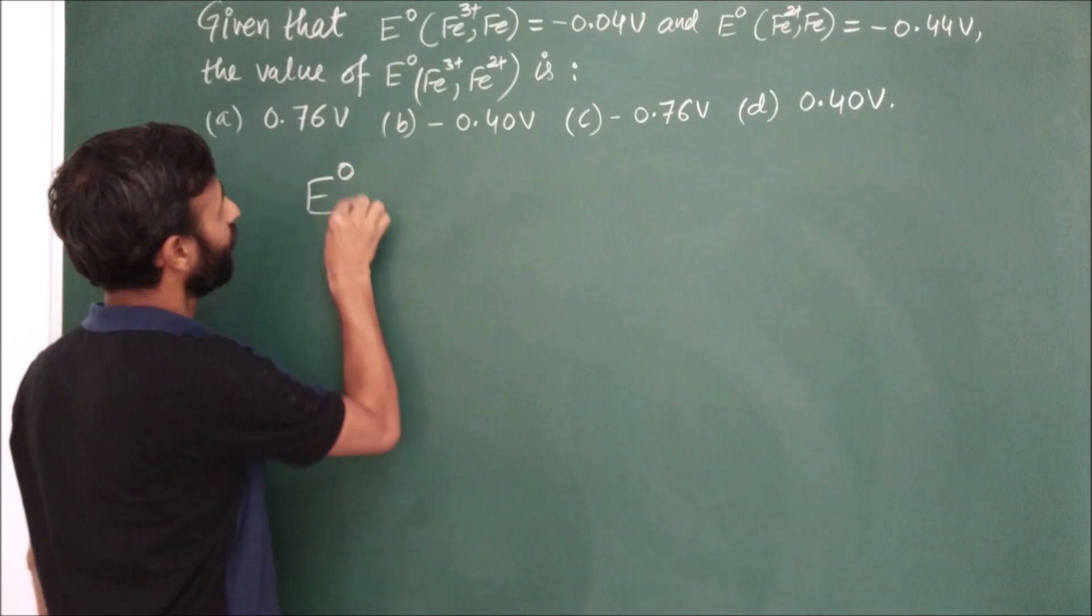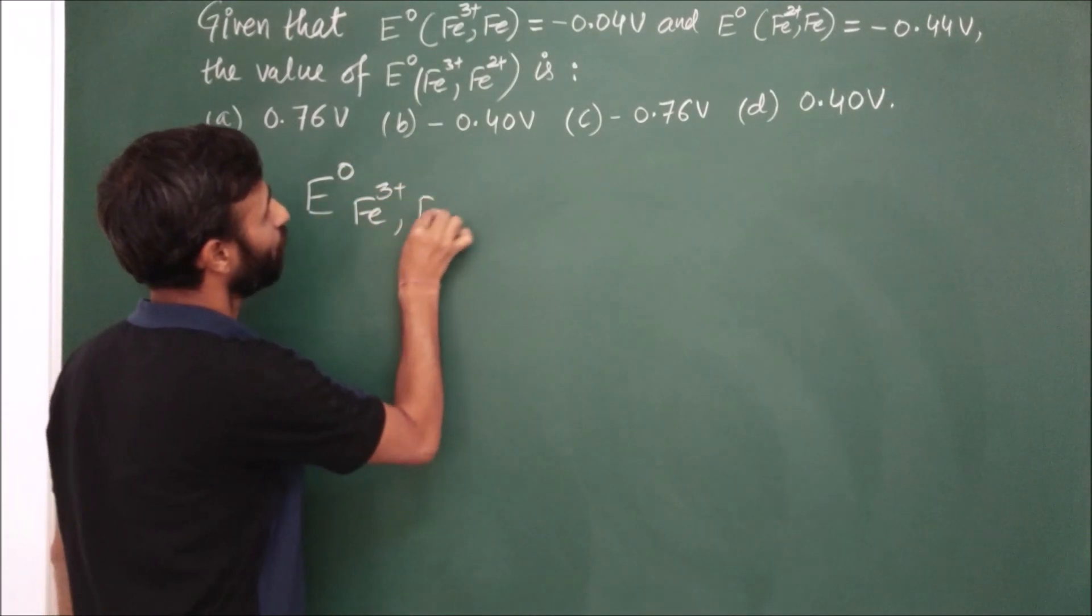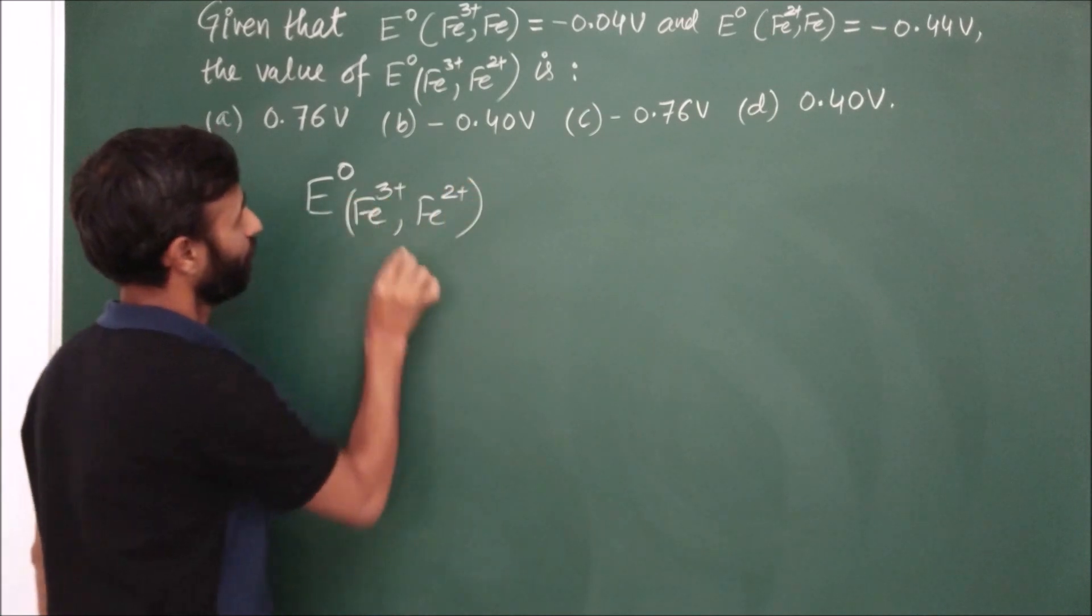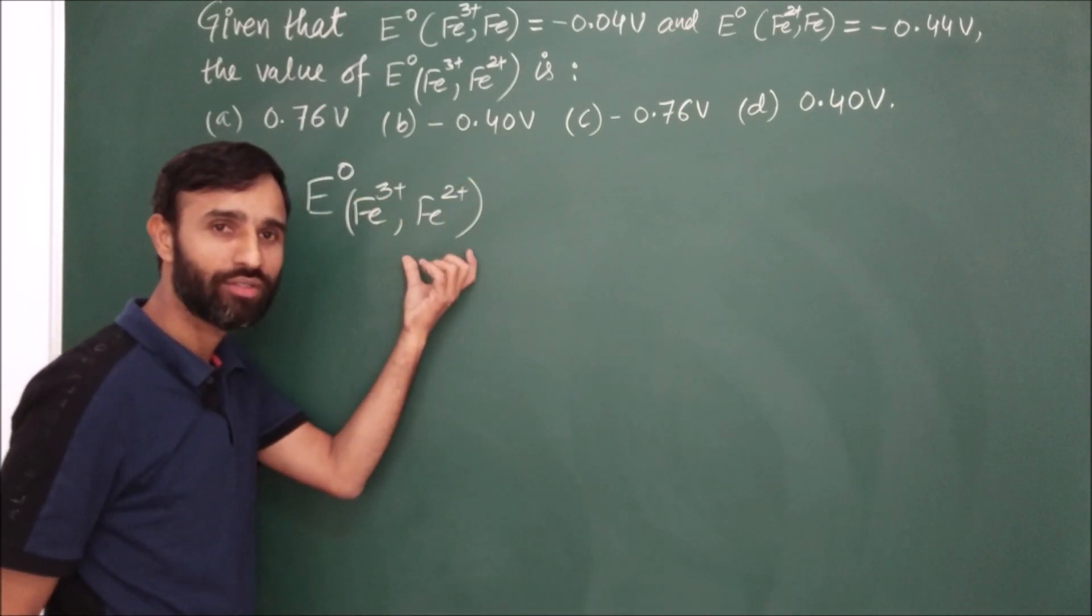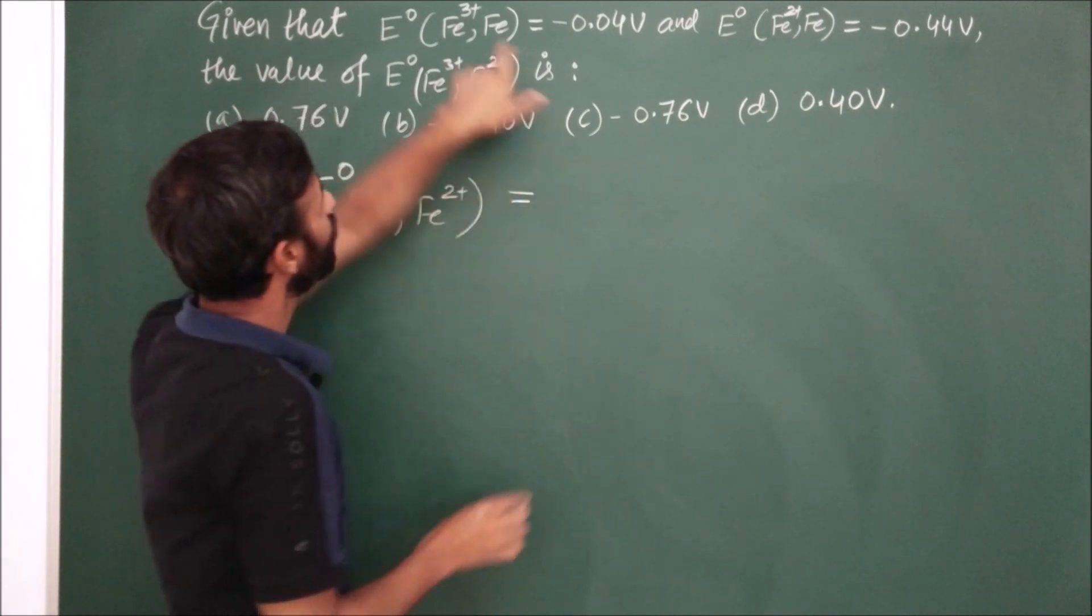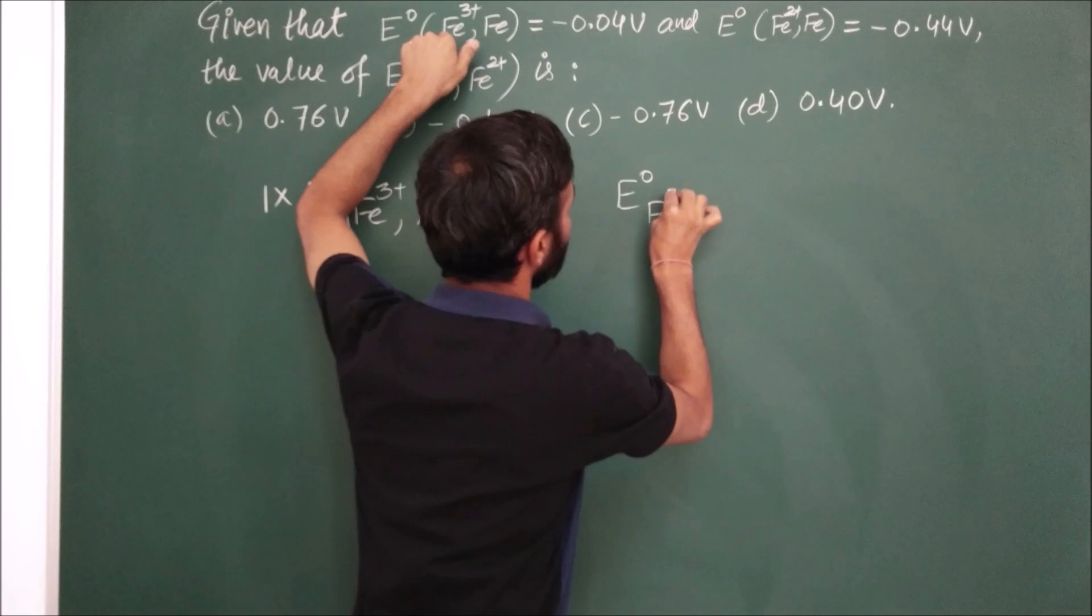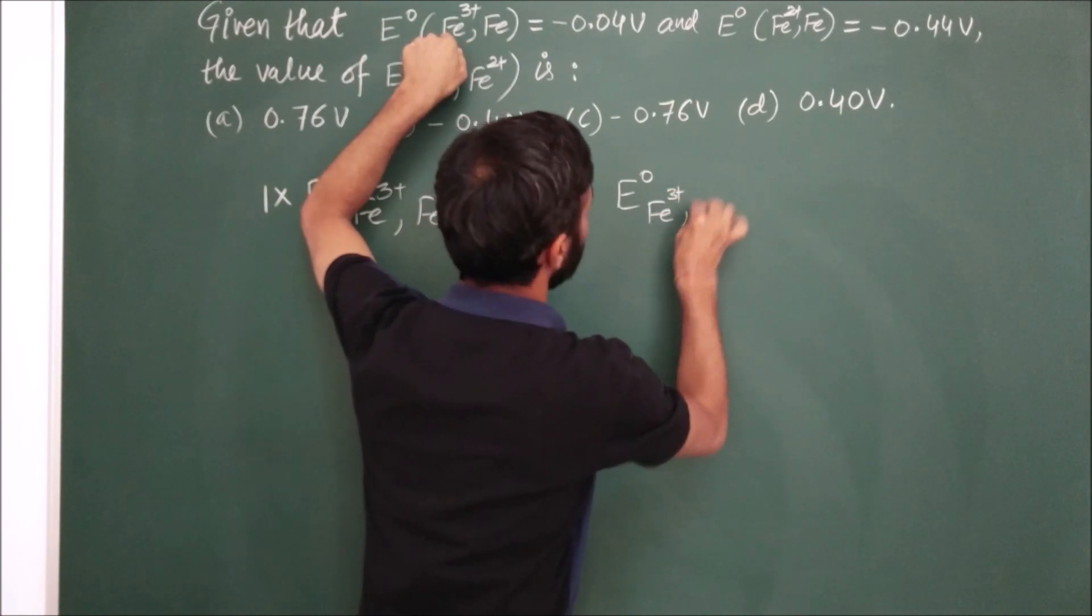Now again, same type of question: E0 Fe3+ to Fe2+. How many electrons are involved? One. So one times equals E0 of Fe3+ to Fe.